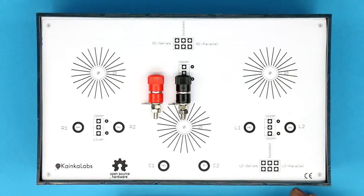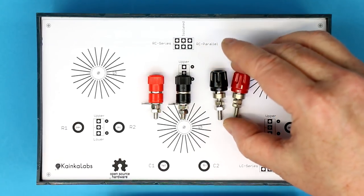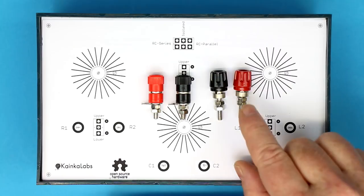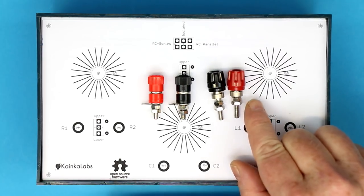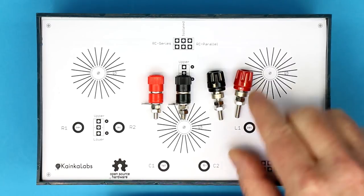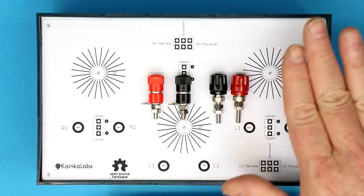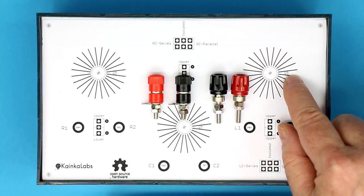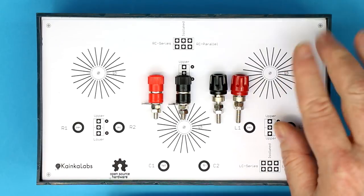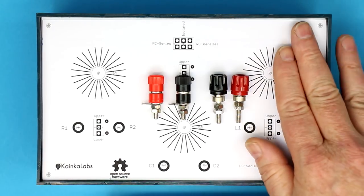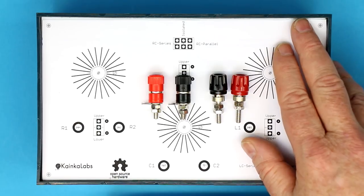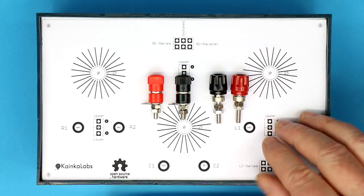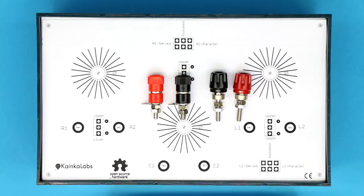There will be two versions available. The standard version will have these binding posts instead of the simple banana jacks in my prototype. There will be a kind of high-end version which will use these high quality Hirschmann binding posts even with gold plating. These are the standard ones but in the high-end version you will get them gold plated as well as a gold plated cover PCB. The finished product will have a PCB as the top cover and the PCB will have gold plated traces and connections in the high-end version.